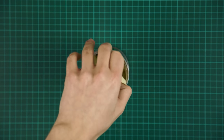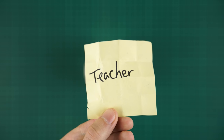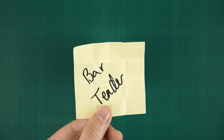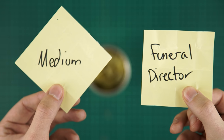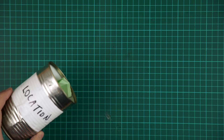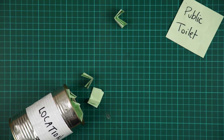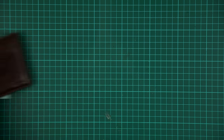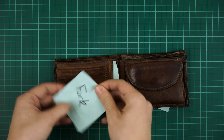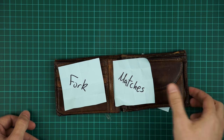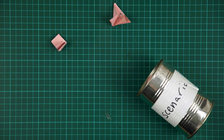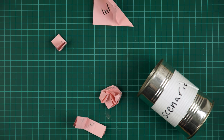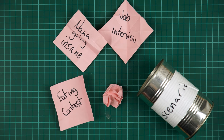Each item doesn't have to be super detailed. We stuck to a few bog-standard occupations for characters like teacher, bartender, and bank manager, and added a few obscure ones like medium and funeral director. The locations were things like public toilet, a beach, and a supermarket. The objects were things like matches, a fork, and some more complex ones like somebody else's wallet. The scenarios we wrote down were things like a job interview, your nana going insane, an eating contest, and an exam.